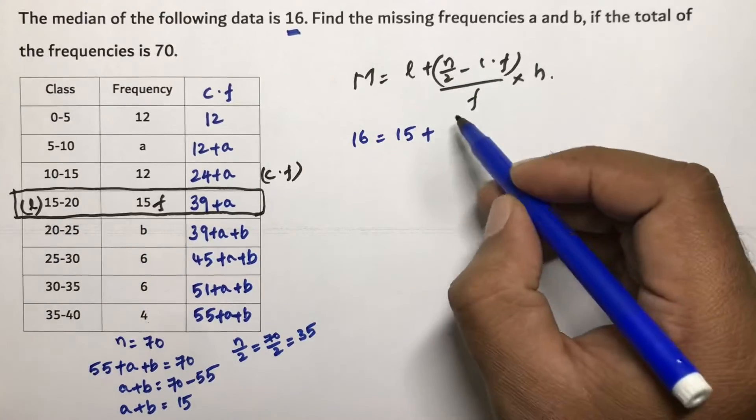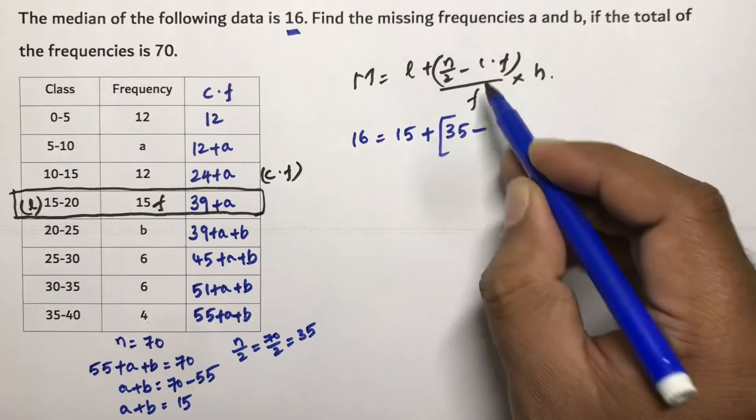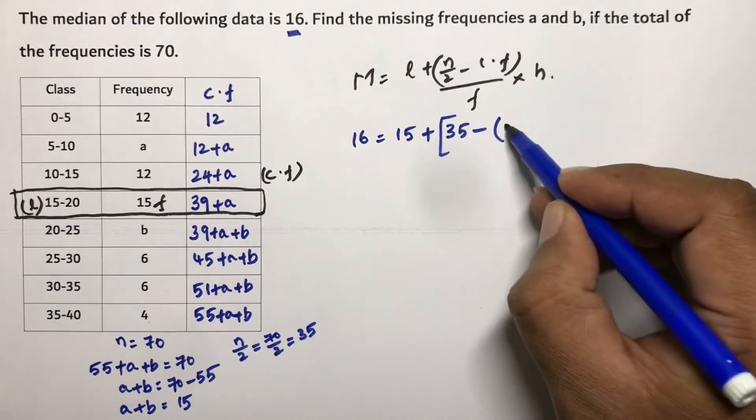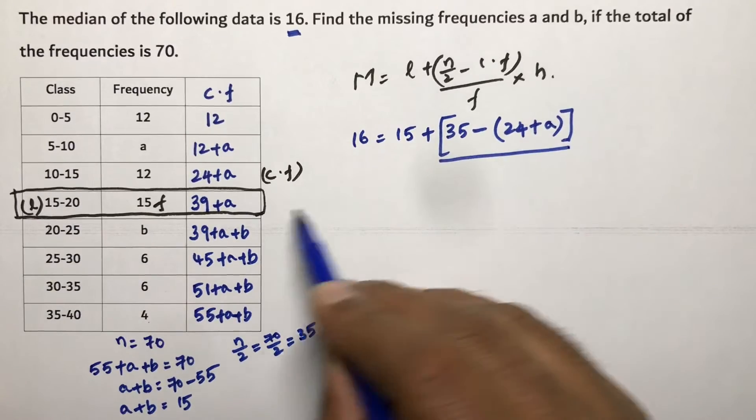N by 2, that is 70 by 2, 35 minus CF. CF is 24 plus a, by small f. Small f is 15 into H.